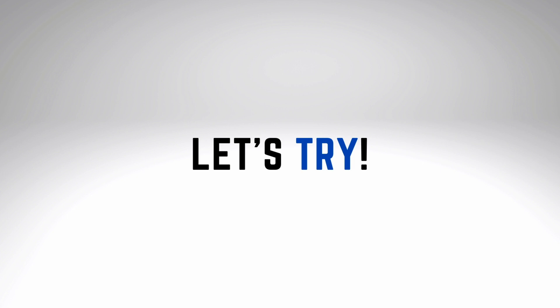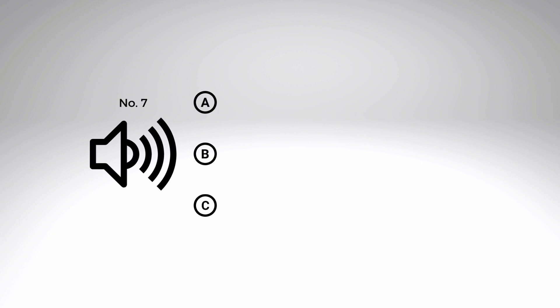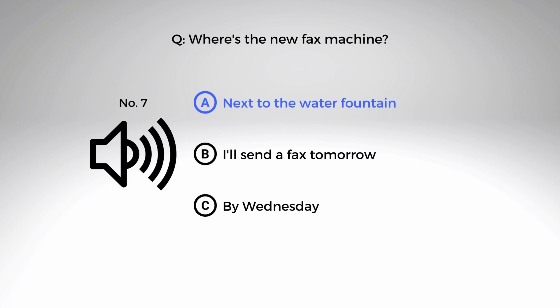Now let's try answering some questions from part two. You will hear a question or statement and three responses spoken in English. They will be spoken only one time. Select the best response. Number seven: 'Where's the new fax machine?' A. Next to the water fountain. B. I'll send a fax tomorrow. C. By Wednesday. The answer is A — next to the water fountain. Note the interrogative 'where' — the correct answer will be a location. Be mindful of the distractor in B; 'fax' appears in the question, but that response refers to a time, not a location.